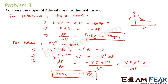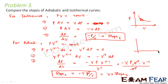So what do we observe? The slope of the adiabatic curve is γ times the slope of the isothermal curve — it is γ × (slope of isothermal curve). Therefore adiabatic curves are steeper because the slope of the adiabatic curve is greater than that of the isothermal curve by a factor of γ.